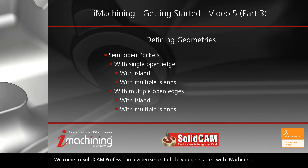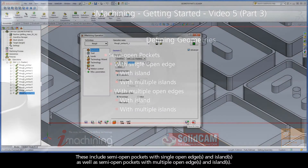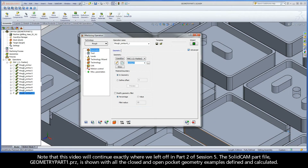Welcome to SolidCAM Professor, a video series to help you get started with iMachining. This video is Part 3 of Session 5, and we will define examples of semi-open pocket geometries. These include semi-open pockets with single open edges and islands, as well as semi-open pockets with multiple open edges and islands. This video continues exactly where we left off in Part 2 of Session 5. The SolidCAM part file, geometrypart1.prz, is shown with all the closed and open pocket geometry examples defined and calculated.